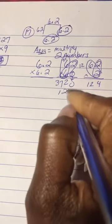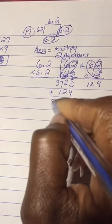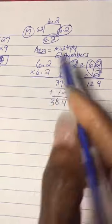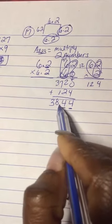I'm gonna take the 124, put it under here, so we have 3844. Go back to your original problem—I see two numbers behind the decimal, so that means I have to have two numbers behind my decimal as well.